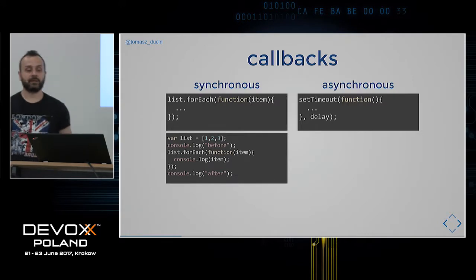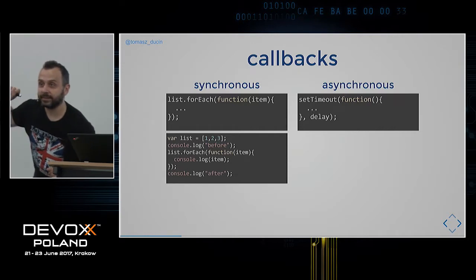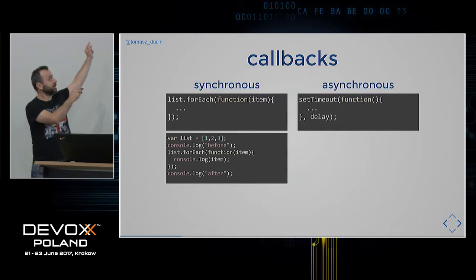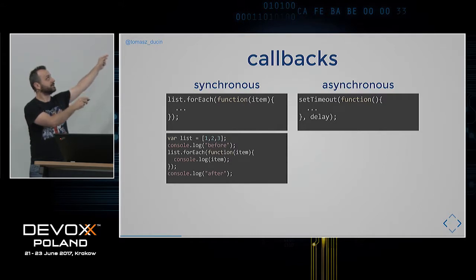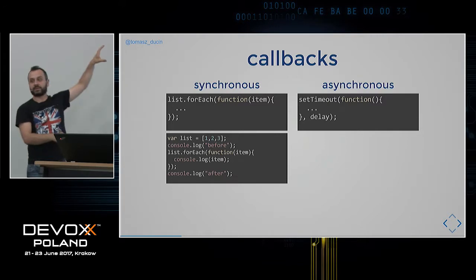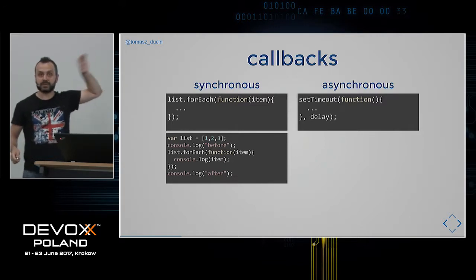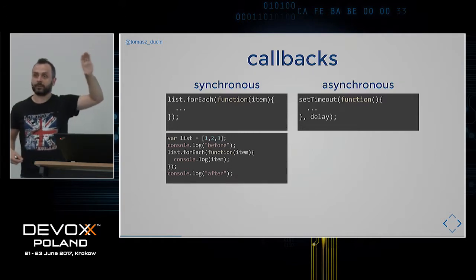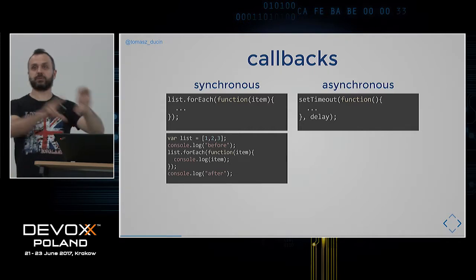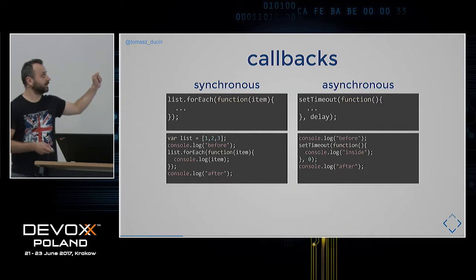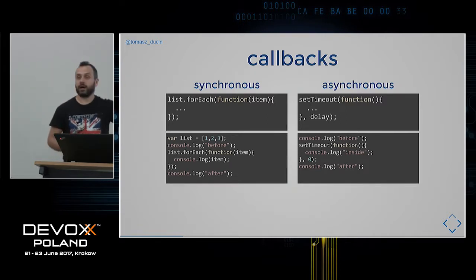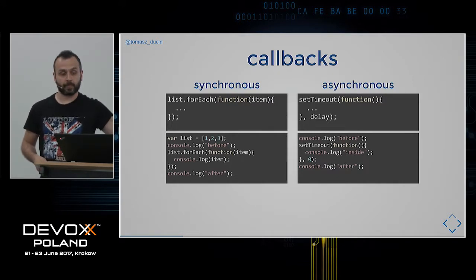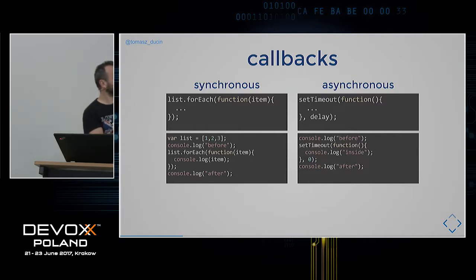In a simple code snippet with a list [1, 2, 3], a console.log before forEach, console.log inside forEach, and console.log after — the output is: 'before', 1, 2, 3, 'after'. It executes linearly going inside immediately. For an asynchronous example with setTimeout, the order is: 'before', 'after', 'inside' — because setTimeout registers the callback with the Web API, then execution continues to console.log 'after' before the callback fires.